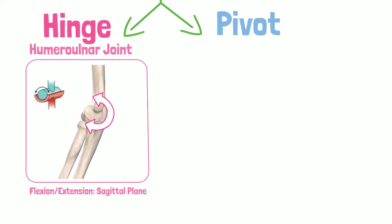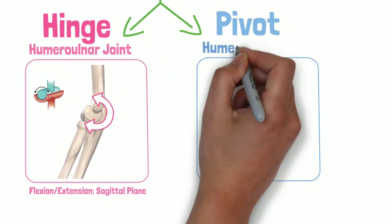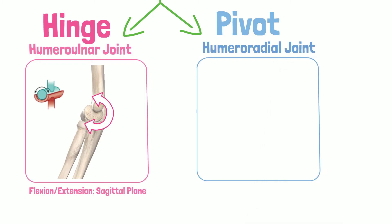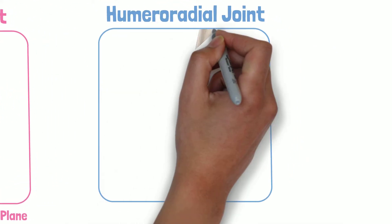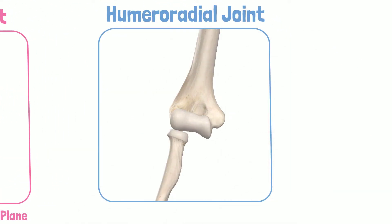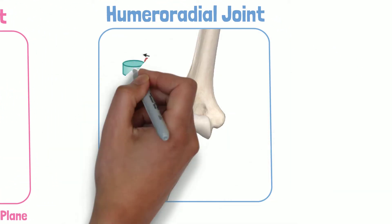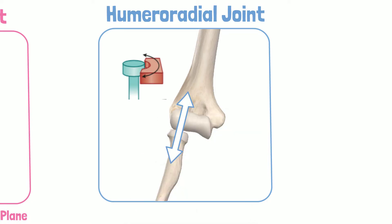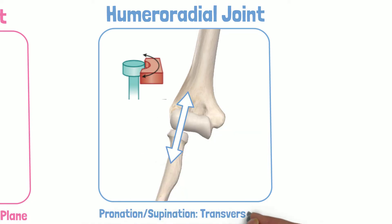An example of a pivot joint is the humeroradial joint. Pivot joints are the union of a convex surface that spins parallel with the longitudinal axis of another bone. The motions allowed are pronation and supination movements around the transverse plane.